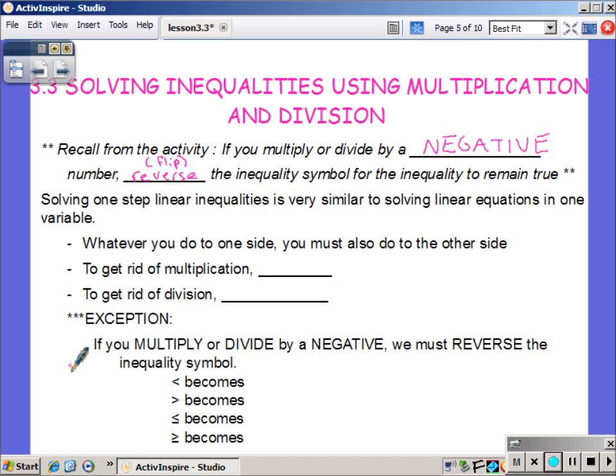We're still doing something to both sides of our inequality, so if we're going to multiply by something, we need to multiply both sides. To get rid of multiplication, its inverse, we will divide. If we have division, we will then multiply. So again, to get rid of multiplication, inverse is division. To get rid of division, inverse is multiplication.